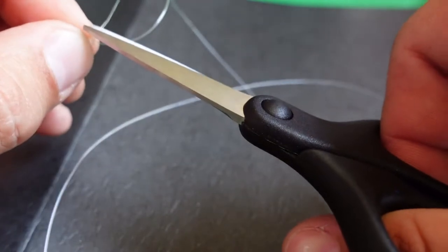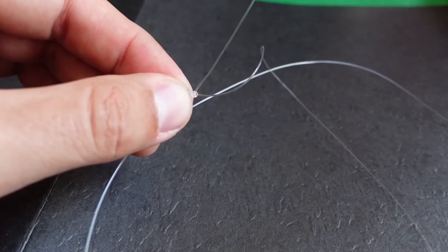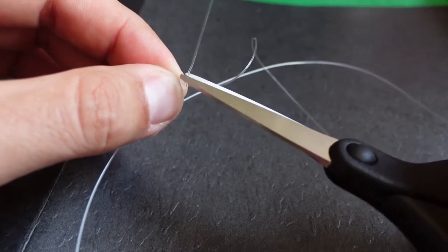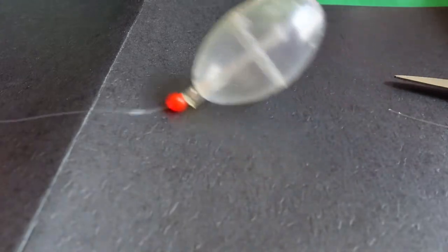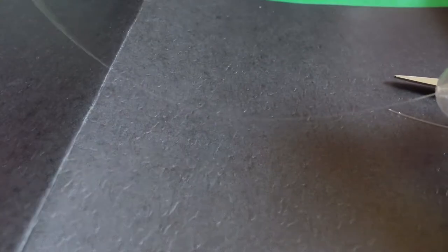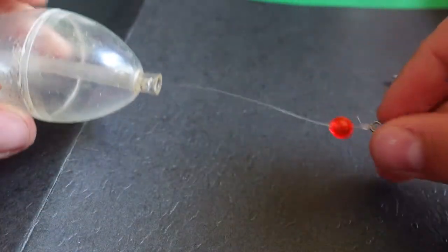This is not for presentation. Let's make sure we get this focused in. Awesome. So, that would be kind of how it sits. This is the main line right here. This is coming from your rod, right? Comes through the casting bubble, through the casting bubble.